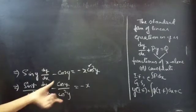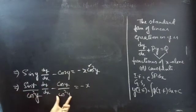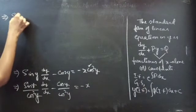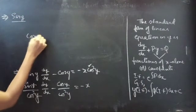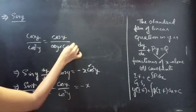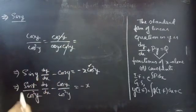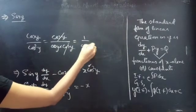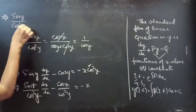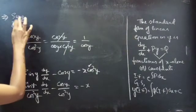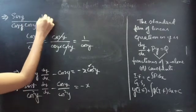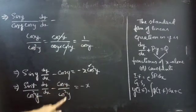In the second term, we have cos y / cos² y. Since there are two cos y's in the denominator, we can cancel one cos y from the numerator, giving 1/cos y. So the equation becomes: (sin y / cos² y) · (dy/dx) − (1/cos y) = −x. We can split cos² y as cos y · cos y, writing sin y / (cos y · cos y), i.e., (sin y / cos y) · (1/cos y) · (dy/dx) − 1/cos y = −x.